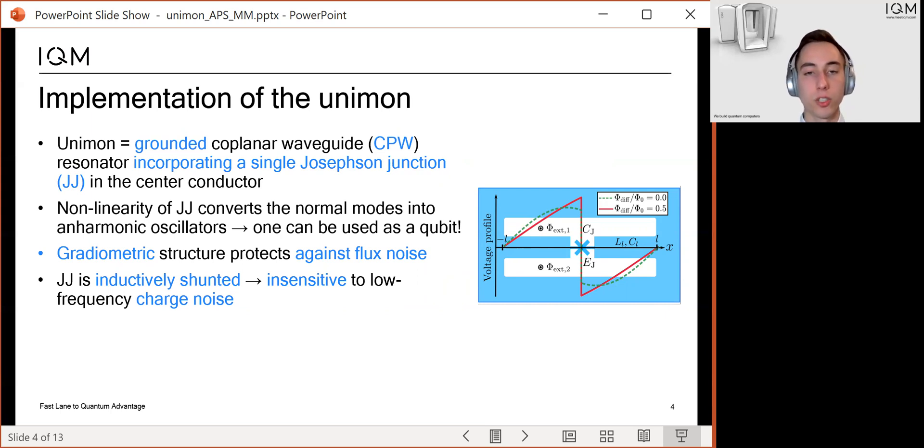If we apply an external magnetic flux through the two loops, the superconducting phase of the junction can be biased and we can also tune the qubit frequency. Importantly, the Unimon has a gradiometric structure and therefore the qubit is only sensitive to the difference of the external fluxes. This provides protection against flux noise.